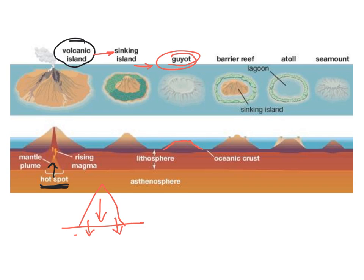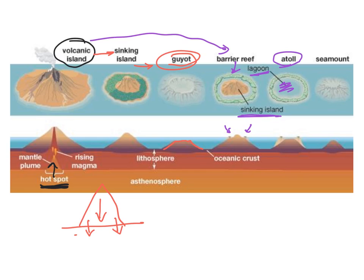A second path involves the growth of coral forming a barrier reef around the sinking island. As the island sinks and coral continues to grow up along its slopes, eventually the island sinks below the surface leaving a ring of coral called an atoll, with a sandy-bottomed interior lagoon surrounded by coral reef. The third path: if the volcano sinks below the surface without coral growth, or never broke through the surface past the hot spot, we get a seamount.